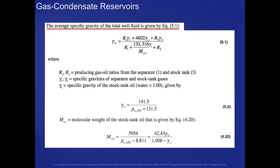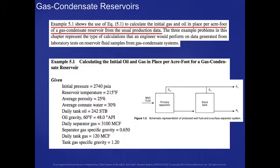The average specific gravity of the total well fluid is given in equation 5.1 in this slide, where the values R sub 1 and R sub 3 represent the producing gas oil ratios from the separator and the stock tank. The specific gravities of the separator and stock tank gases and the specific gravity of the stock tank oil are measured, and we will use them in this equation. We have an expression for the condensate that's formed as it shows up in this expression as well.